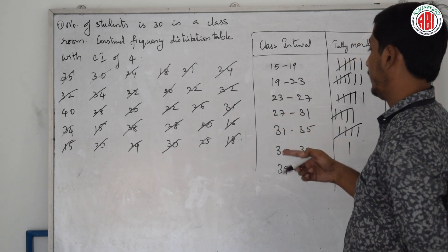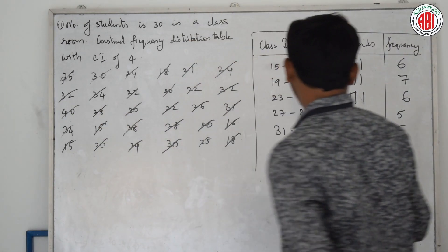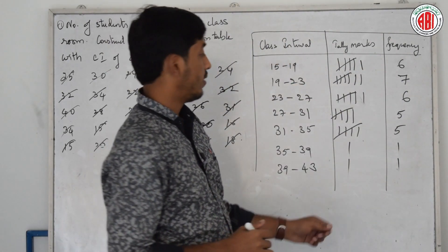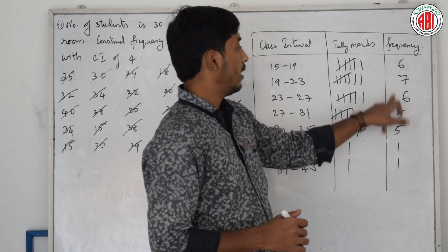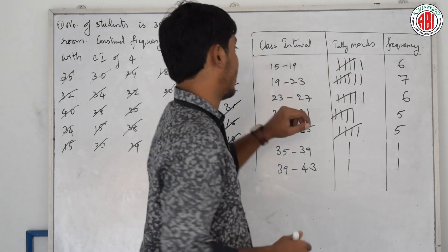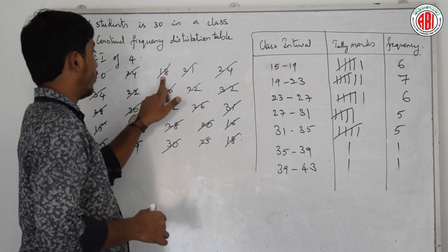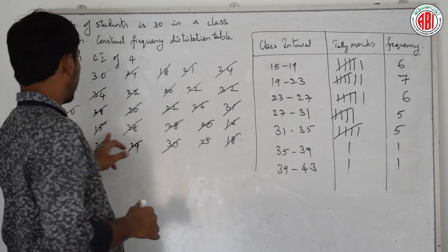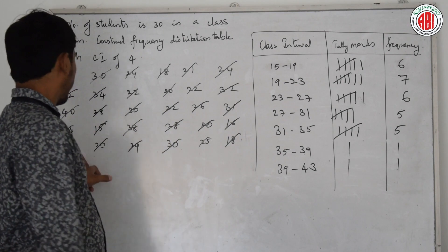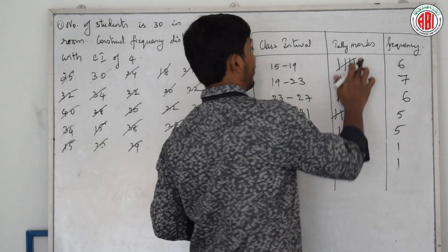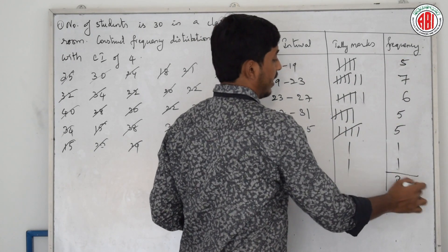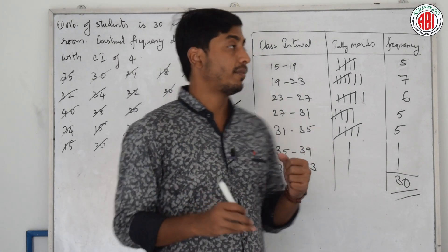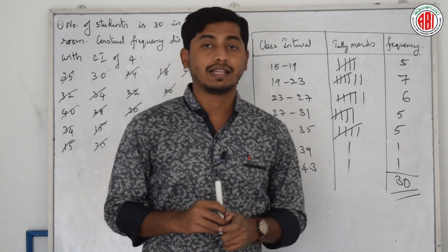Now we have to add all those frequencies. Adding them up: 5, 7, 6, 5, 5, 1, plus a few more — we get a total of 30. You have to check this every time. Since the problem stated 30 students, and our total is 30, the table is correct. The key thing is to draw this table properly.